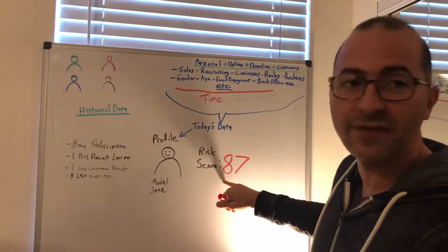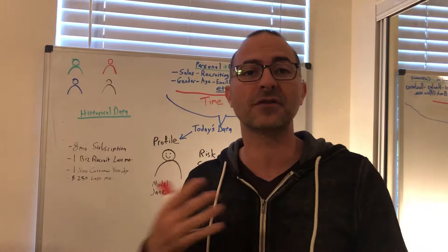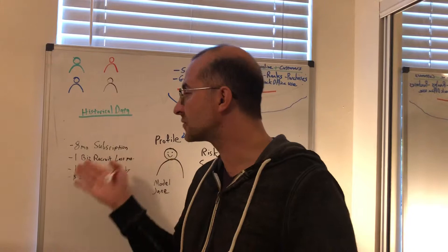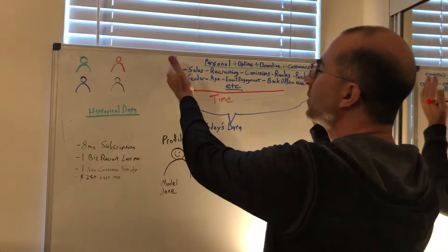But Jane has a risk score of 87, which means Distro is pretty sure she's in her last 30 days of her life cycle right now. How does it do that? How does it come up with that idea when on the surface Jane looks like a model distributor? Well, let's go up here.